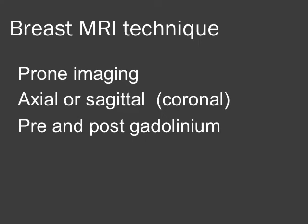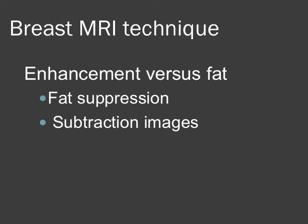Breast MRIs are acquired prone, most commonly in the axial and/or sagittal planes. Some facilities, due to software limitations, acquire them in the coronal plane, which is a little more challenging to interpret. Images are obtained both before and after the administration of intravenous gadolinium. Some means of suppressing the fat is key — we need to see areas of gadolinium enhancement contrasted against normal breast fat. This can be through spectral fat suppression, subtraction images, or more commonly both. Relying solely on subtraction images has inherent problems with artifact and patient movement, and non-suppressed images are extremely challenging for seeing small areas of focal enhancement.